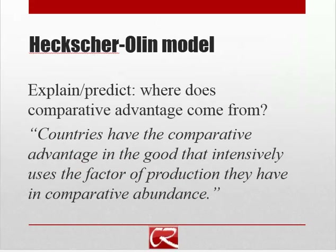The other model I'd like to talk about is what's called the Heckscher-Ohlin model. The idea is to go back to the Ricardian model and think about where comparative advantage comes from. As the definition here says — and it is complicated — countries have the comparative advantage in the good that intensively uses the factor of production that they have in comparative abundance.